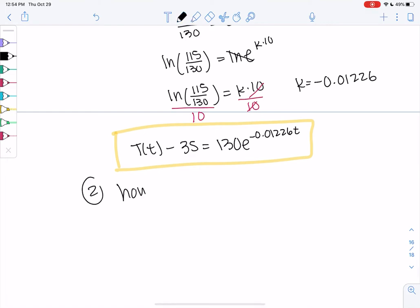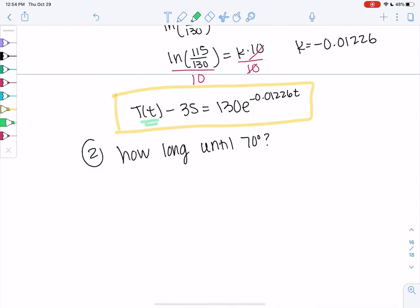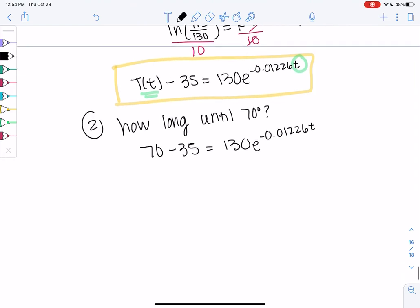And then the question was, how long until 70 degrees? Because we don't want to place the frosting on too soon, right, because the frosting might melt and make a mess. So we have to wait until it cools down a bit. So I'm going to plug in 70 and solve for time. So 70 minus 35 equals 130e to the negative 0.01226t. And if you're feeling confident about solving, you should just stop the video and solve it. But if you still need to work with me, here we go. So I get 35 on the left side, equals 130e to the negative 0.01226t.